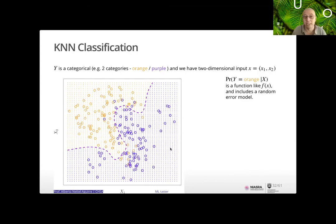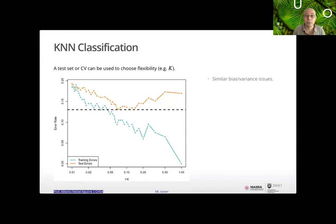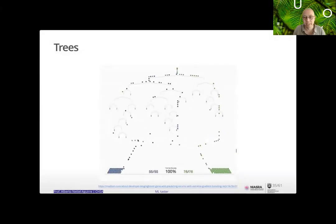With 10 neighbors, KNN does pretty well at approximating the true separation boundary. There's still the bias-variance trade-off as you move K: one nearest neighbor gives high variability, and you can use cross-validation to find the test error and choose the right number of neighbors. So there's still that bias-variance competition.